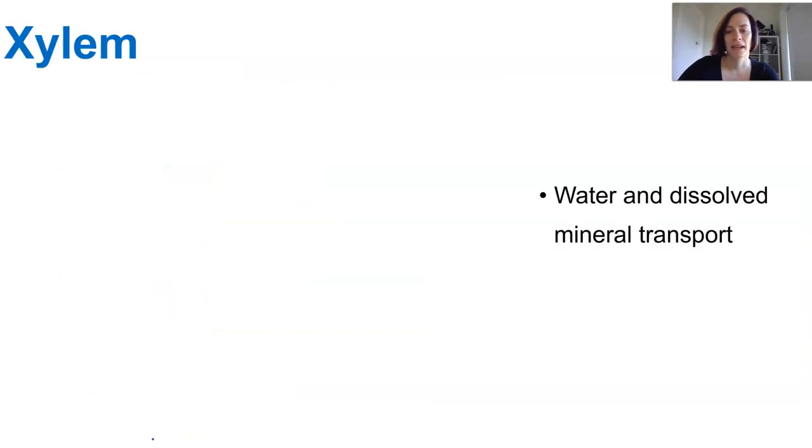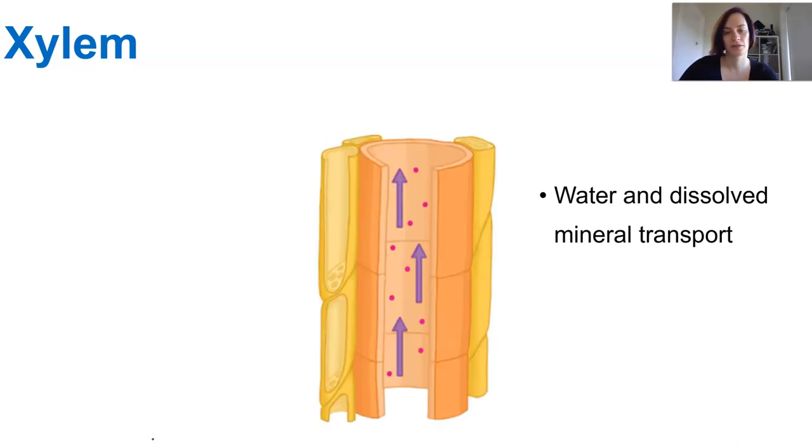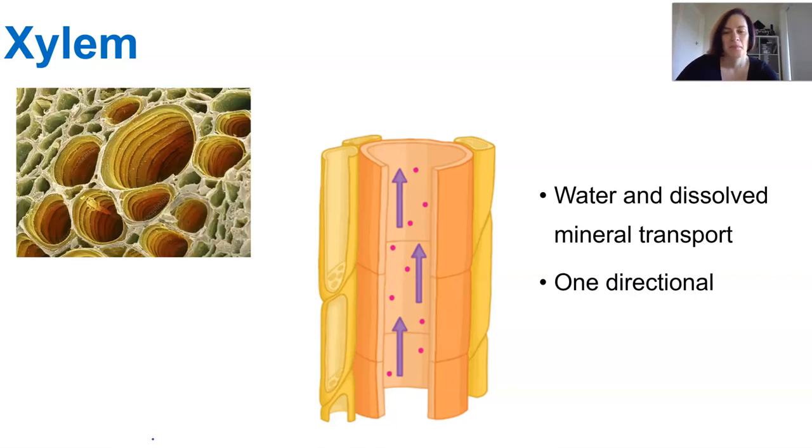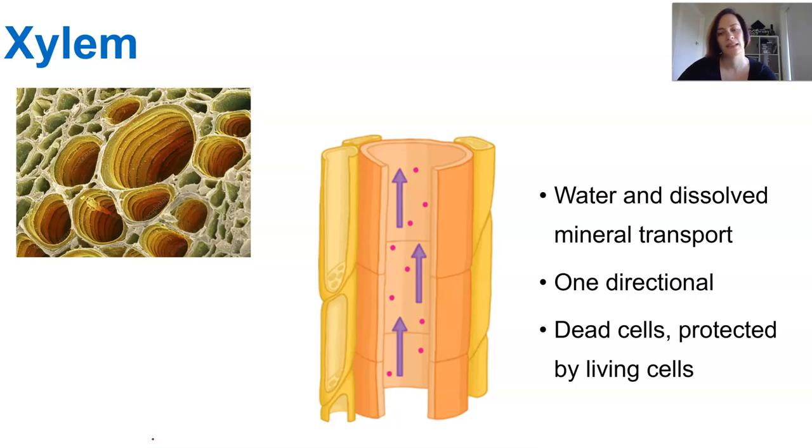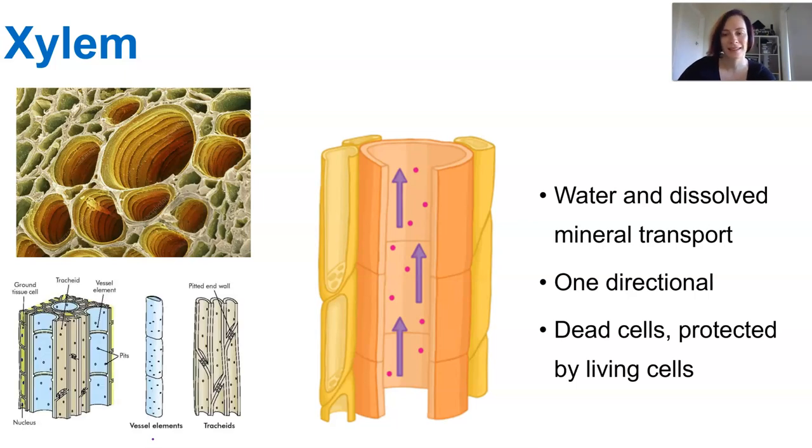We'll discuss the xylem first. These are made of cells which form tubes to carry water and dissolved minerals from the roots to all parts of the plant. They only carry water in one direction from the roots to the leaves, but it's their structure that makes them super unique. They are basically tubes made of dead cells end to end and they're also surrounded by living cells to help protect them.